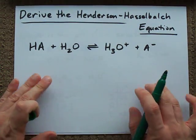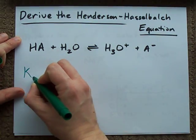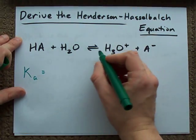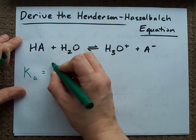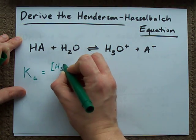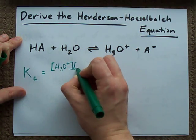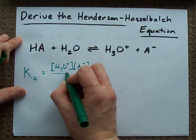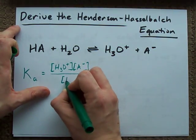you already know that Ka is products over reactants. It's an equilibrium. H3O plus, A minus, that's conjugate base, all over HA.